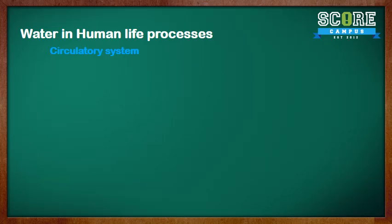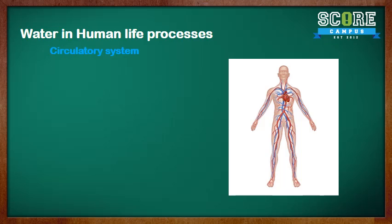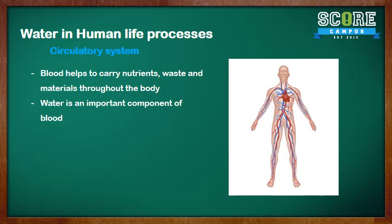In the circulatory system, blood helps to transport nutrients and waste materials throughout the body. And water is an important component of the blood. Without water, there will be no blood. Without blood, we won't be able to transport nutrients and waste materials throughout the body.